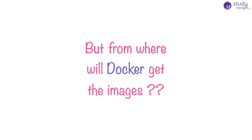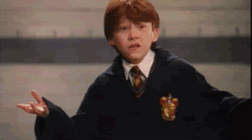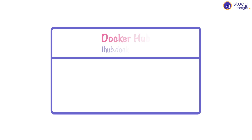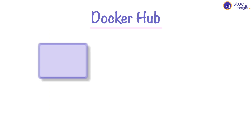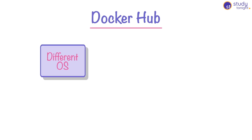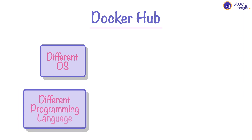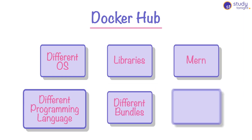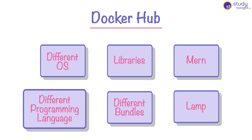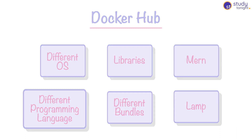But where does Docker get these images from? Docker has a public repository called Docker Hub where all Docker images are uploaded and stored. Docker images for different operating system versions, programming languages, libraries, different bundles like MERN stack and LAMP stack, and different databases are already available — and you can install them by running a single Docker command.